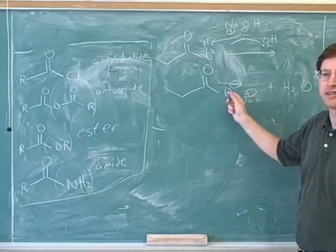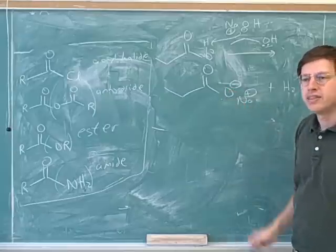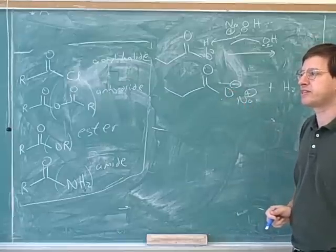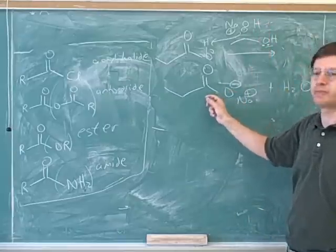So we're pretty much done here. This will be the product. We'll just have a carboxylate. This was the theme I mentioned earlier. Remember that if you have a carboxylic acid, under basic conditions, it becomes a carboxylate. We already talked about how under basic conditions a carboxylic acid turns into a carboxylate.